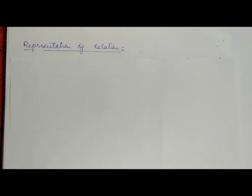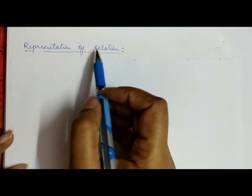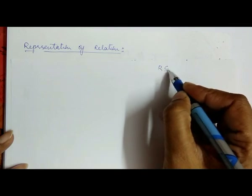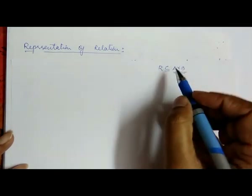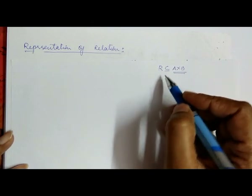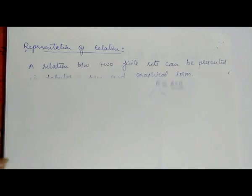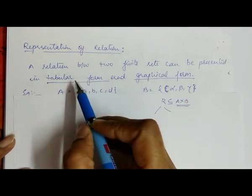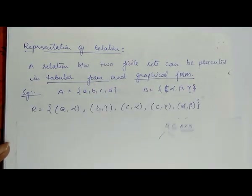Hello friends, now we discuss representation of relation. As you know, relation R is a subset of A cross B. We can represent this relation in two forms: one is graphical form and one is tabular form. A relation between two finite sets can be represented in tabular form and in graphical form.